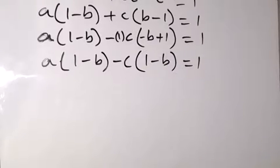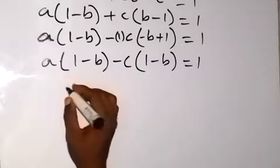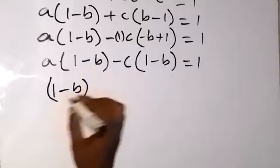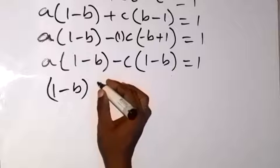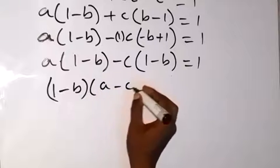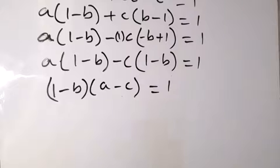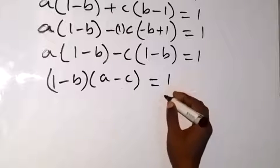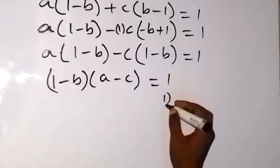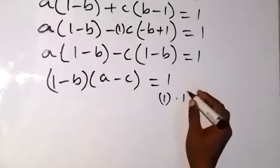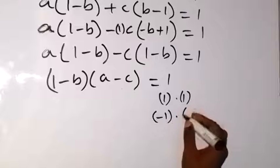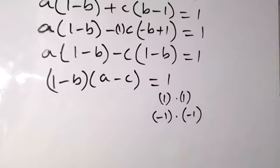And when we write it properly now, we have A into bracket 1 minus B, then minus C into bracket 1 minus B, then equals to 1. So we can write this as bracket 1 minus B times bracket A minus C equals to 1. So we have two cases here, because 1 can be written as 1 times 1, or negative 1 times negative 1, which also gives us 1.